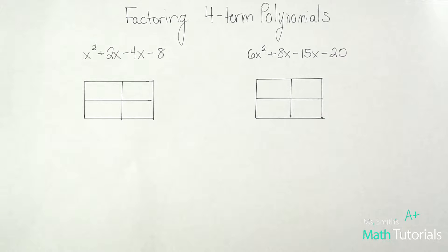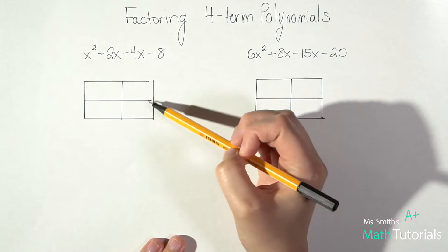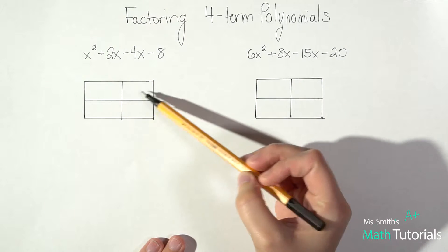In this video we're looking at an alternate way to factor four-term polynomials. This is kind of an alternate way instead of the traditional way of factoring. In this way we use a box and it's important that this is a two by two box.